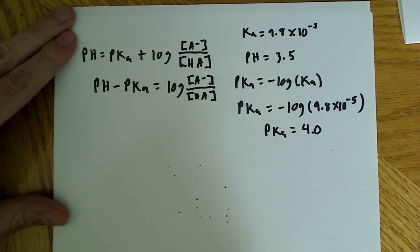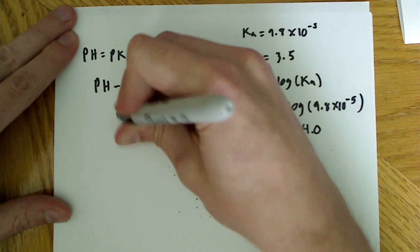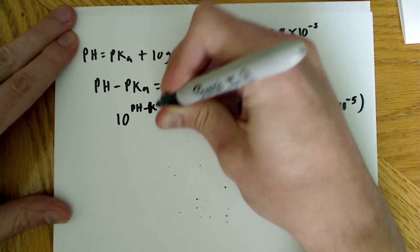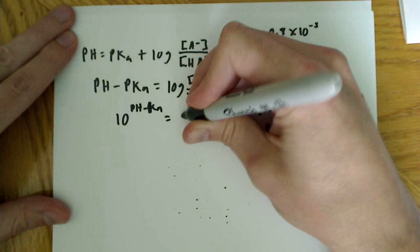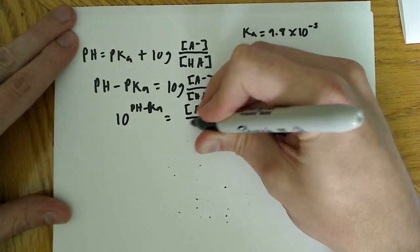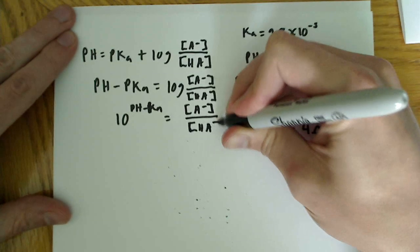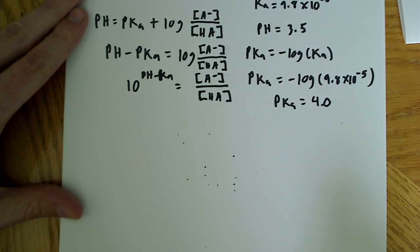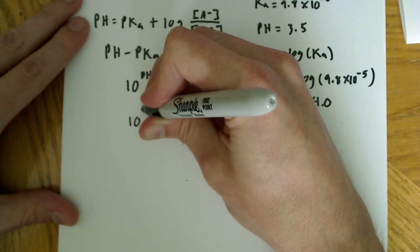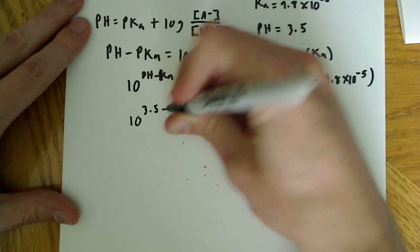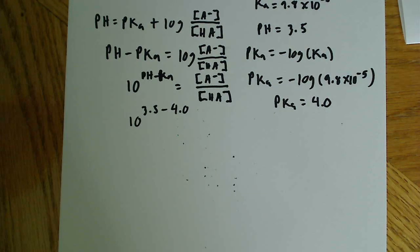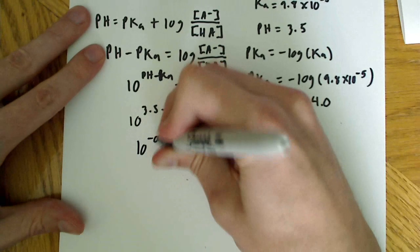Now, from here, we need to take the inverse log of both sides. So, inverse log of this side. Inverse log of the pH, which is 3.5 minus the pKa, which is 4, gives us the inverse log of negative 0.5.